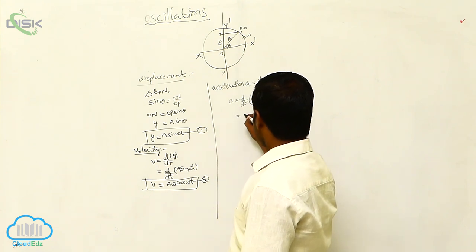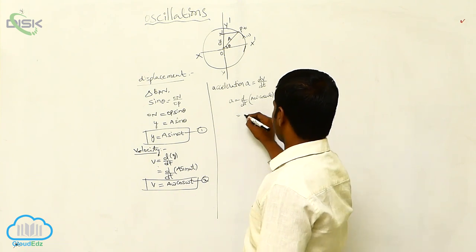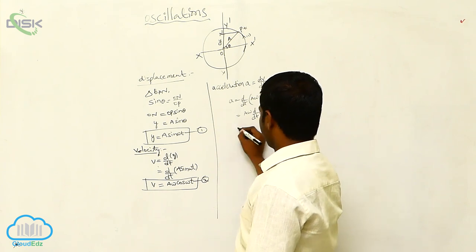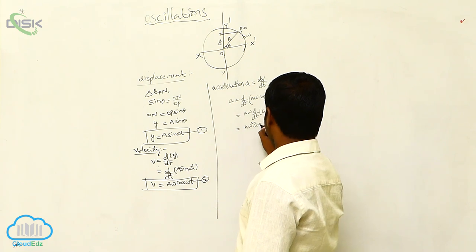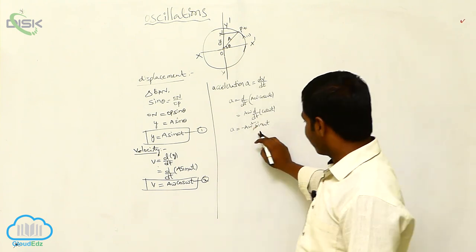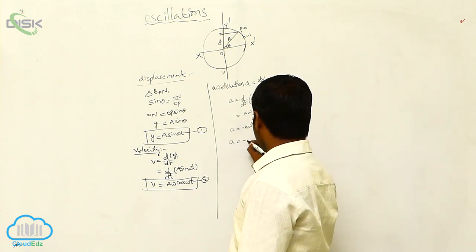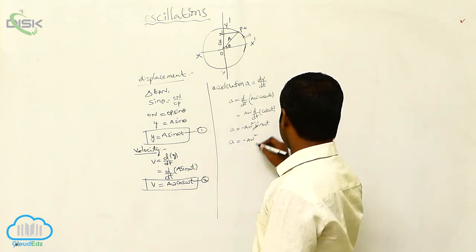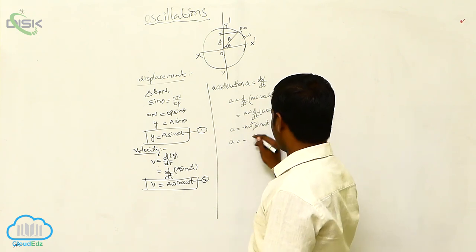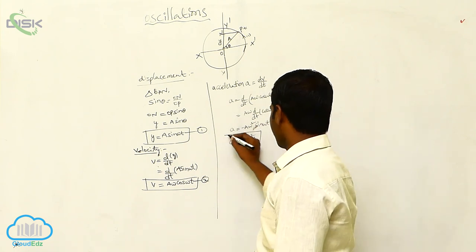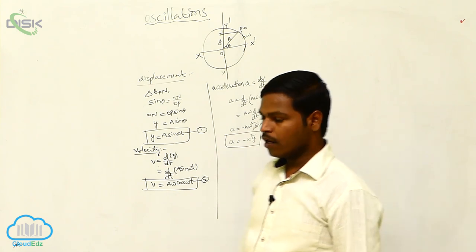Acceleration is the rate of change of velocity. Acceleration a = dv/dt = d/dt (Aω cos ωt) = Aω × d/dt(cos ωt) = -Aω² sin(ωt). Since A sin(ωt) = y, we can write acceleration a = -ω²y. This is the acceleration of simple harmonic motion.